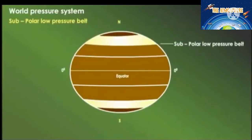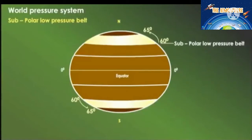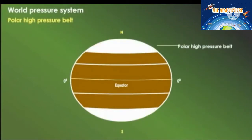Subpolar low pressure belt: this belt extends between 60 and 65 degrees latitudes in both hemispheres. This is a zone of wind convergence. The rotary movement of the earth causes low density of atmosphere over this belt, so the atmosphere is thin and can exert only low pressure. Around the North Pole and the South Pole, the temperature remains low and thus a permanent high pressure develops over the poles.